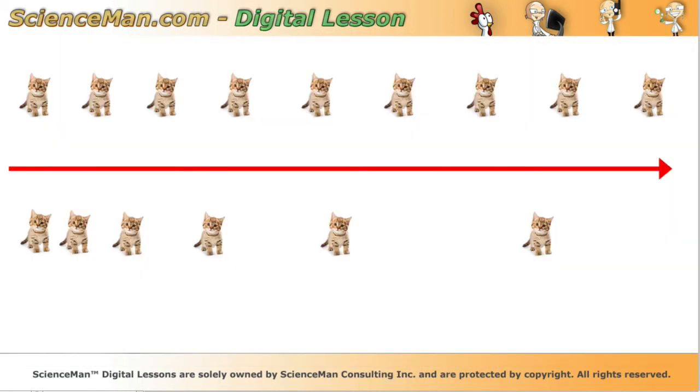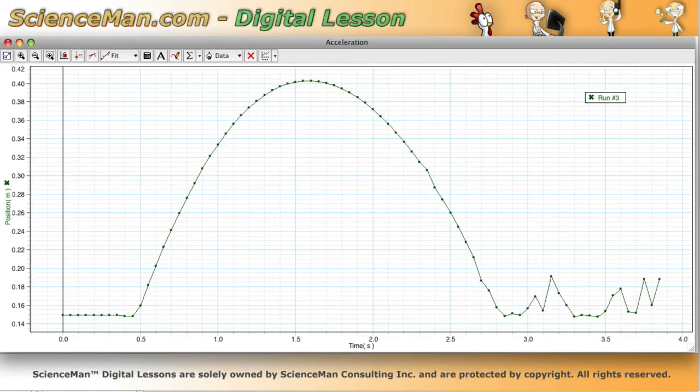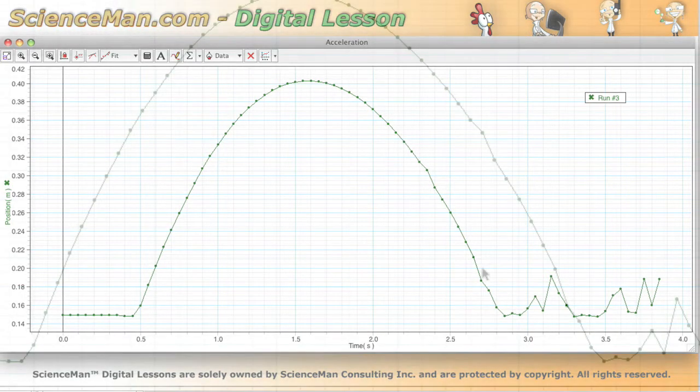For a curve like this it's more challenging. What we really need to do is if we're going to be able to tell if this is accelerating or not, and remember if the amount of distance that's being covered is changing every unit of time then the object is accelerating, we really need to take little snapshots of the velocity of the object.